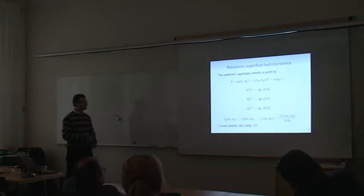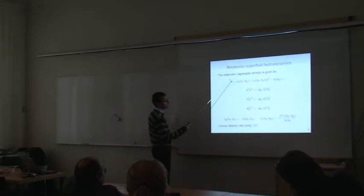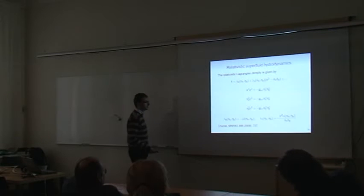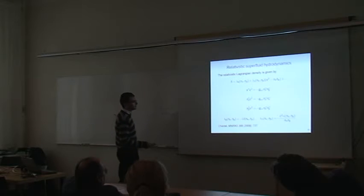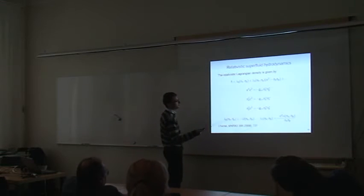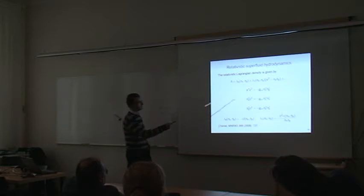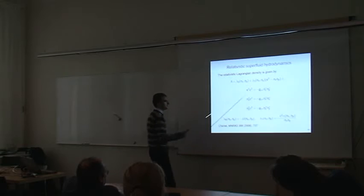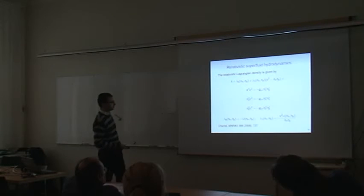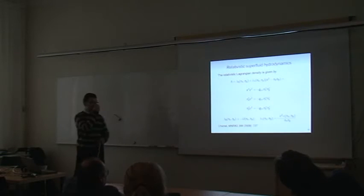If we go to relativistic superfluids, basically we can play the same game. In this case the Lagrangian density looks like this, where lambda-zero basically corresponds to the internal energy density. When we allow for multi-fluid flows, one gets an extra piece. Again, this is just the lowest-order term, so one can consider much more complicated Lagrangians adding more terms, but here we are just considering the simplest things since usually relative flows are very small.